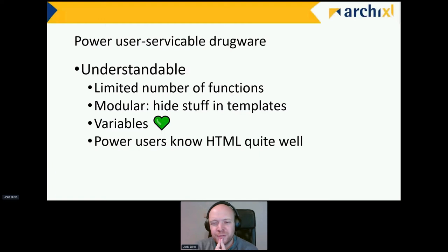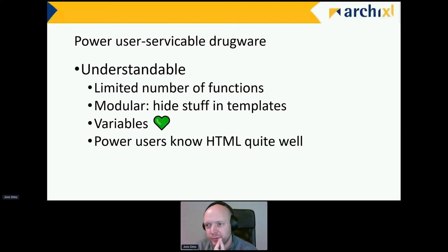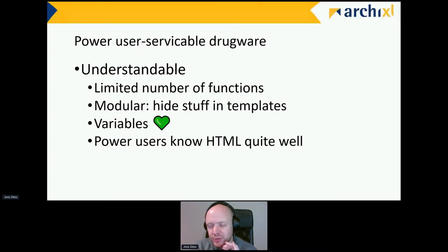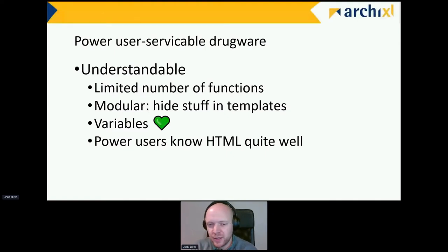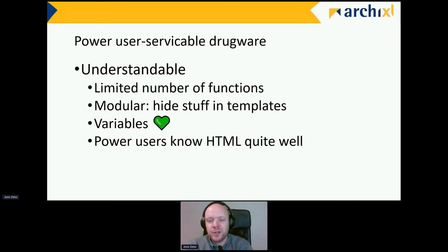I want to create power-user-serviceable software. Those users are power users — they know some stuff, they know HTML, they know some programming languages — but they've never worked with Semantic MediaWiki. So I try to give them a limited number of functions. In every template I make, I try to make it as easy as possible for them to learn, and I hide the more difficult stuff in templates. Because it's modular, I try to avoid anything but variables, because once you call the variables on the page you can use them in a template nested in another template nested in another template.